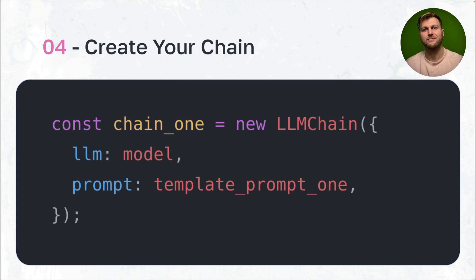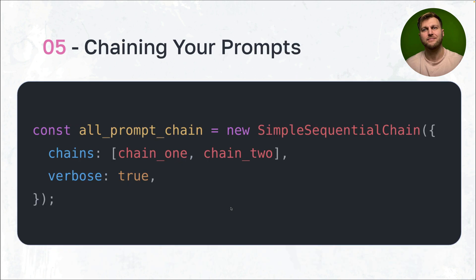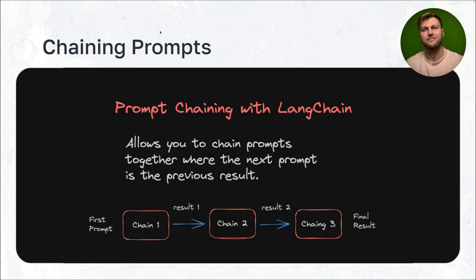Now we create our first chain using the new LLMChain constructor. LLM stands for language model — we pass in our model, which refers to OpenAI, and our prompt, which is the template we just created. Once you've created multiple chains, you can chain them all together. Here we have allPromptsChain using the SimpleSequenceChain constructor, passing chain one and chain two. The verbose true flag shows output so you can see what's happening. Whatever result comes from chain one is passed as input to chain two, and you can chain as many as you want.